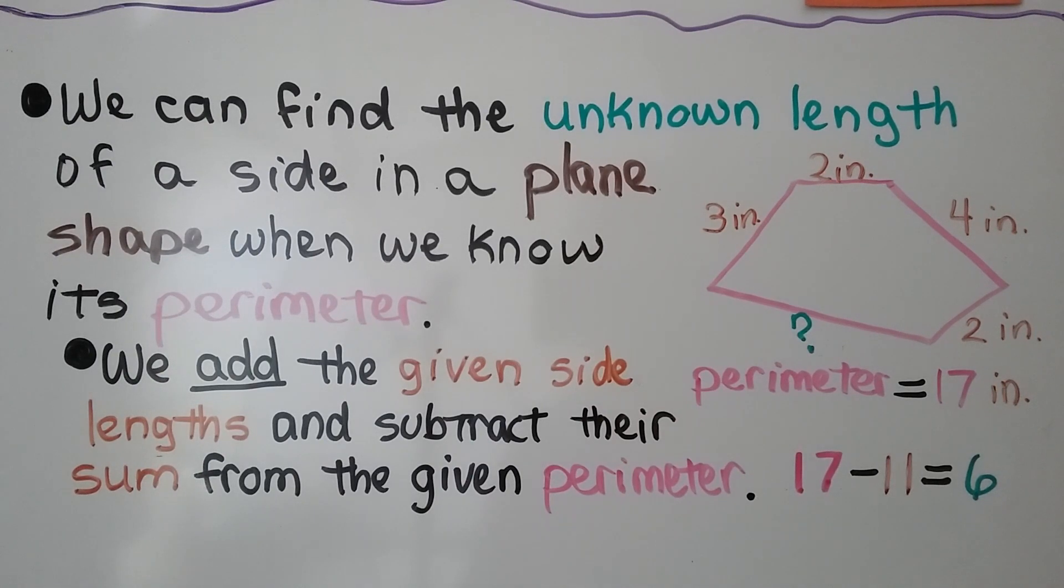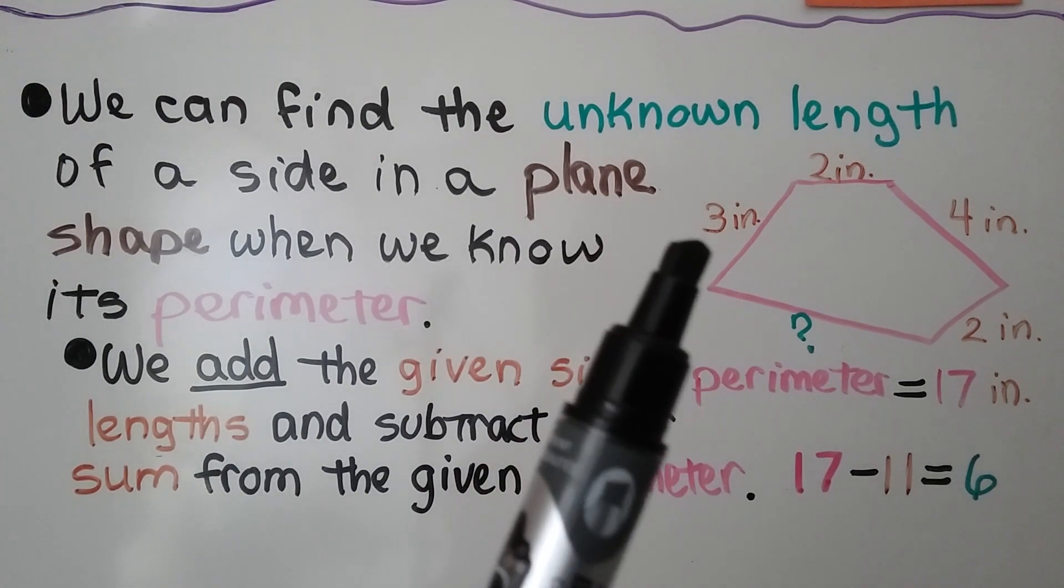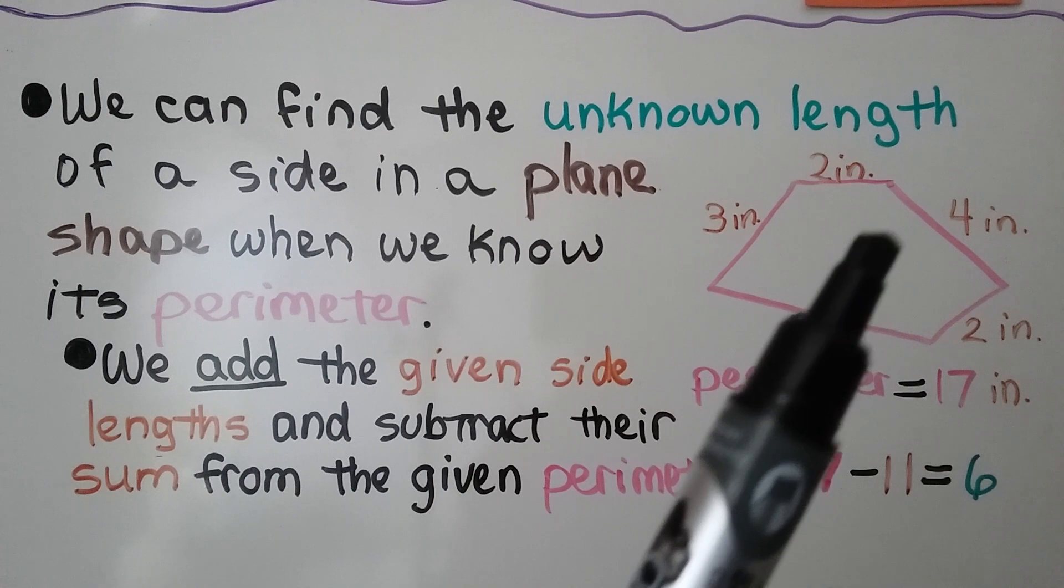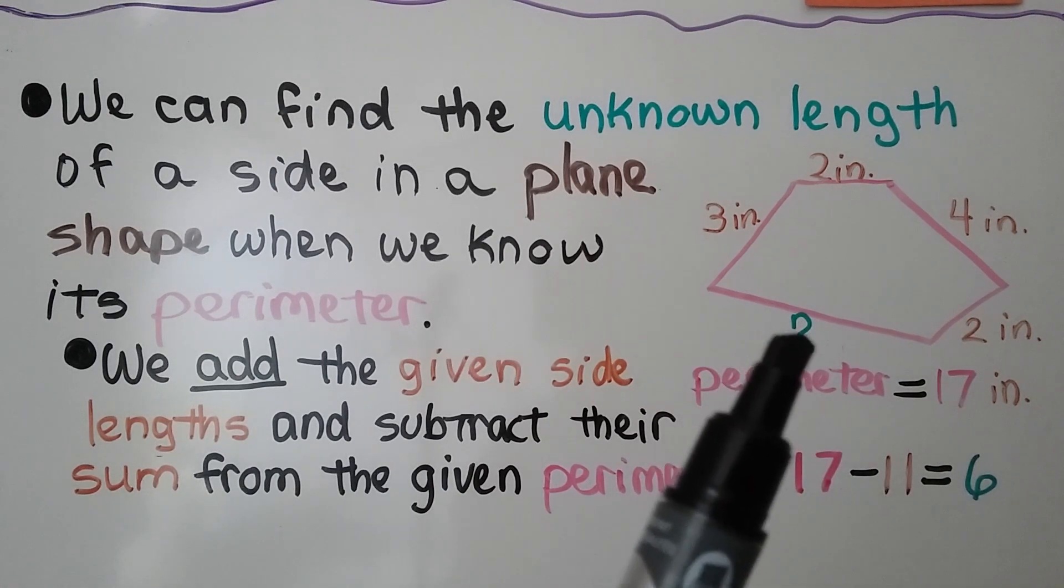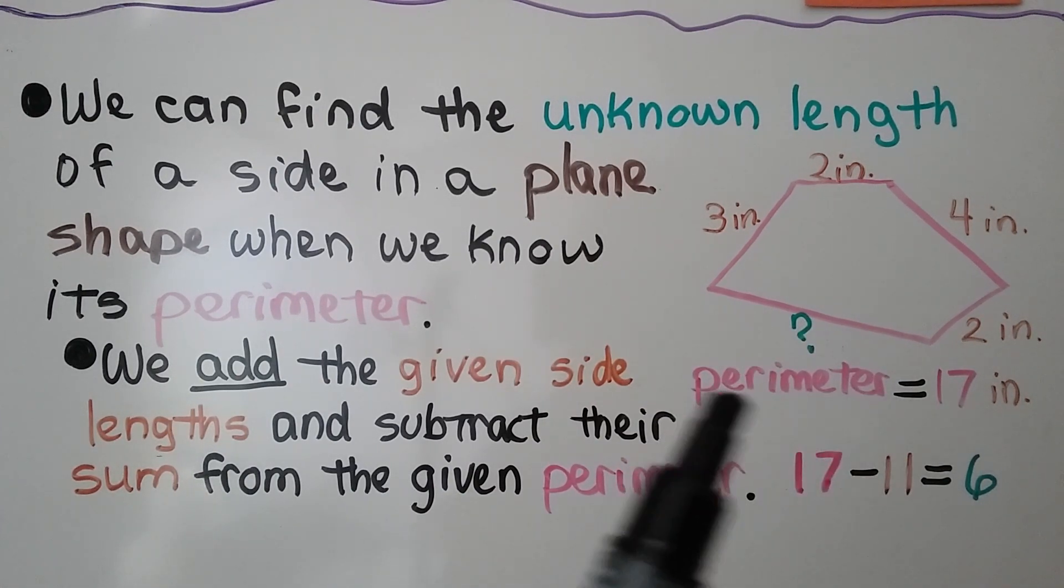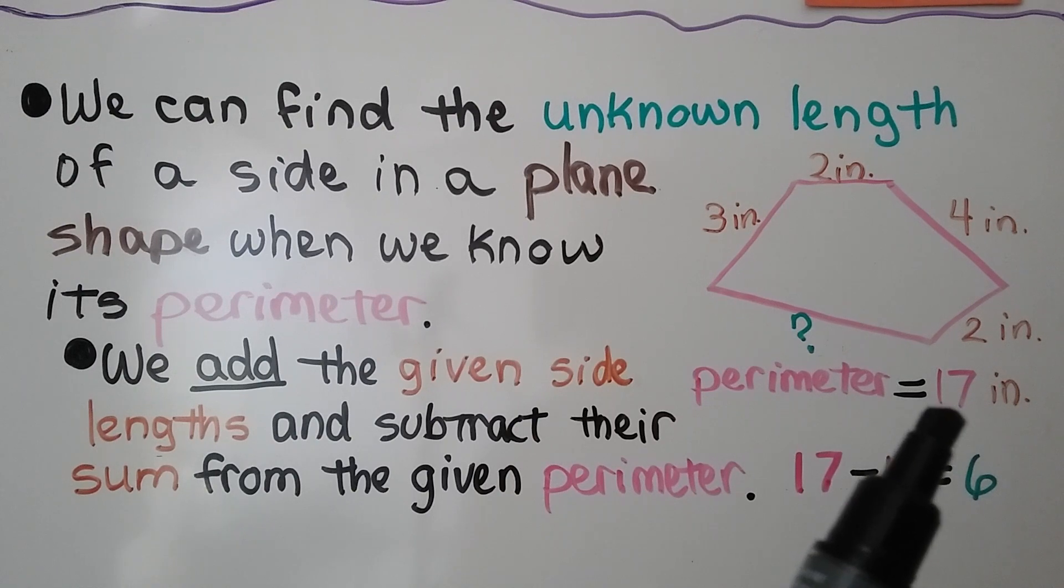We can find the unknown length of a side in a plane shape when we know its perimeter. Take a look at this shape. We know that side is 3 inches, we've got 2 inches, 4 inches, 2 inches. We don't know what this side is, but we do know the perimeter is equal to 17 inches.